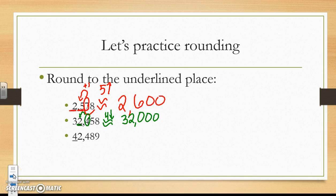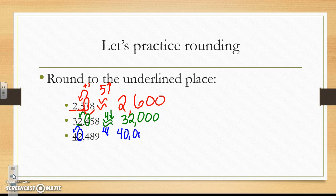Let's look at another example. Here I am rounding to the ten thousands place. The ten thousands place is underlined. I am going to circle the number that is directly to the right of the ten thousands place. I see that the 2 is 4 or lower, so this 4 stays the same. And then everything else from the circled number to the right becomes zeros. So 42,489 is approximately 40,000.